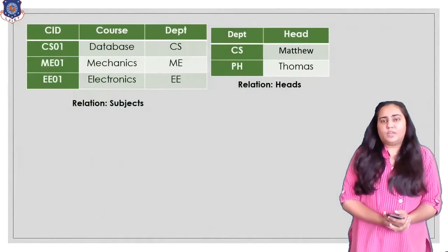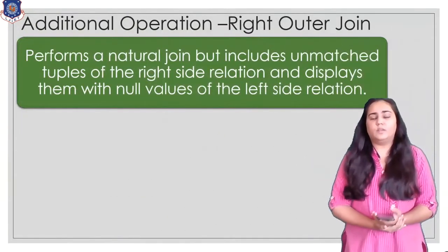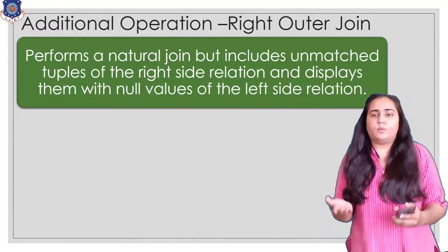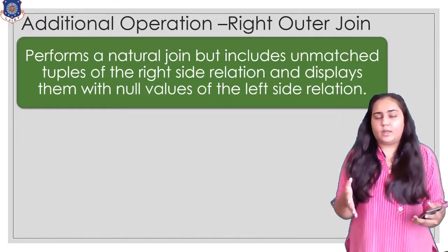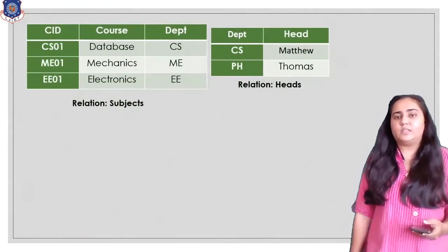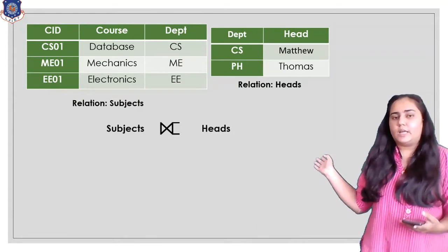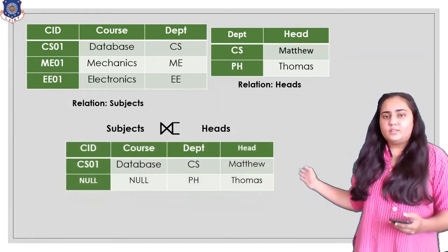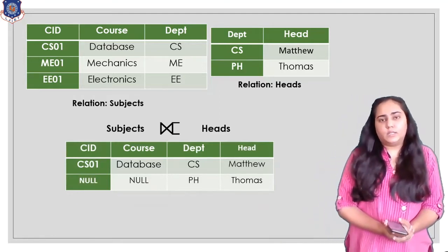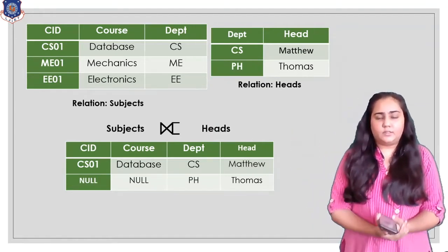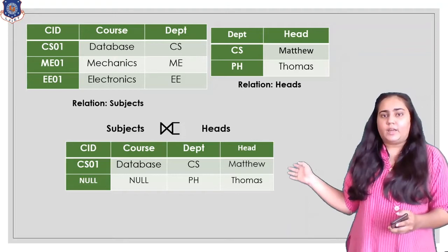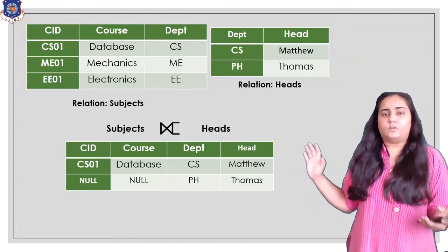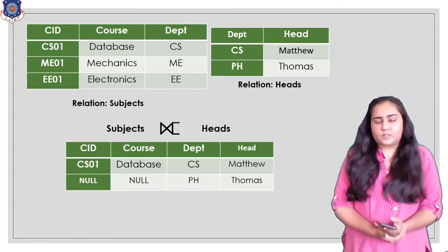The right outer join also performs a natural join, but this time the unmatched tuples of the right side relation are retained with null values for the left side columns. You use the bowtie symbol with extension lines on the right side. The result shows that c_id and course are null for the PH/Thomas row since PH is not present in the subjects table, while the matched CS row remains as it is.